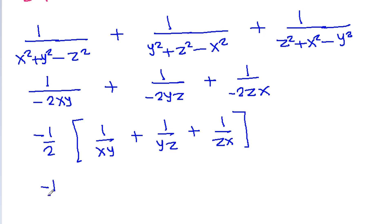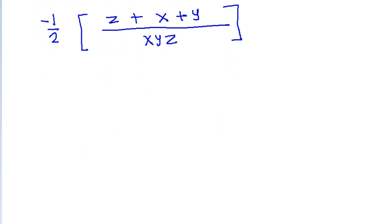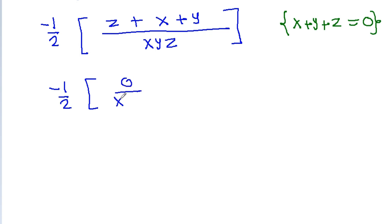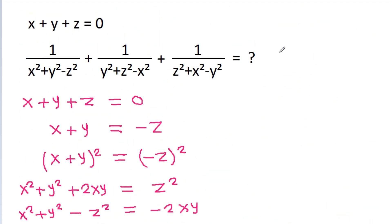This equals minus 1 by 2 times, with common denominator xyz, we get z plus x plus y over xyz. Since x plus y plus z is equal to 0, this becomes minus 1 by 2 times 0 by xyz, which is equal to 0.